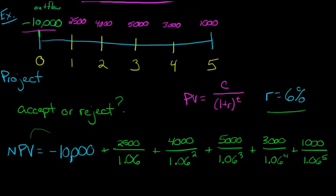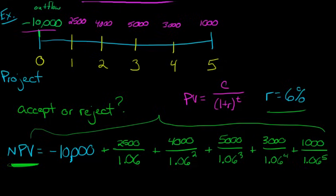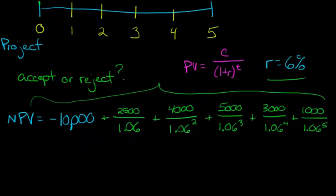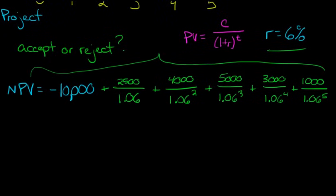So ultimately, this formula here is going to yield our net present value. Now, and then we'll talk about how to interpret that and what we're going to do with it in a moment. But let's just go ahead and finish out these calculations. So this net present value is going to be equal to that negative $10,000 that we incur up front to start this project.